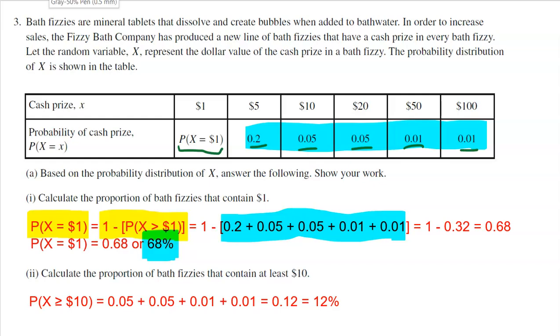All right, part two of part A says, calculate the proportion of bath fizzies that contain at least $10. So at least 10 means 10 or greater. So I first wrote that out using proper notation, the probability that X is greater than or equal to $10. And then I literally went and added up the proportions for 10, 20, 50, and 100.